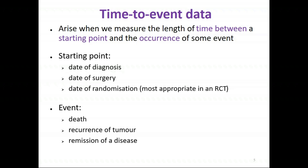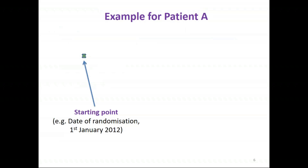Examples of events of interest include death, which is a very common event — particularly in oncology trials — and we often refer to that outcome as overall survival. But it doesn't have to be death; we might be interested in recurrence of a tumour, or in a positive event such as remission of a disease.